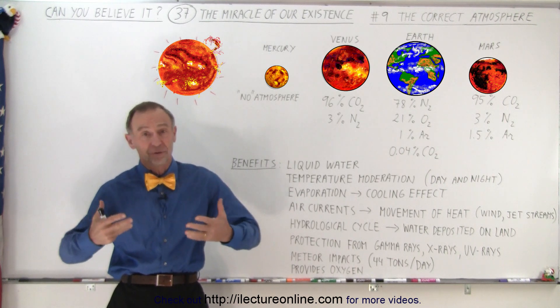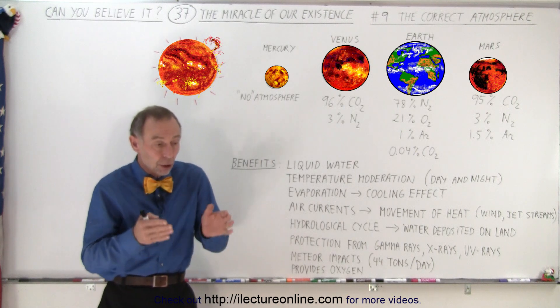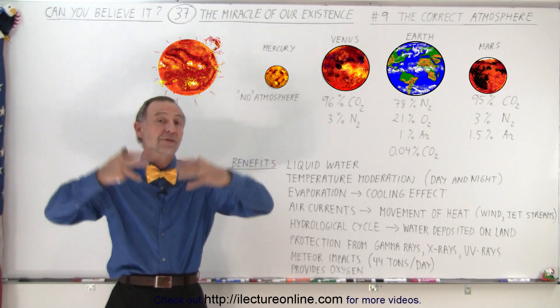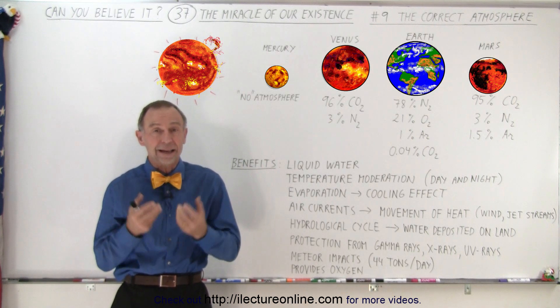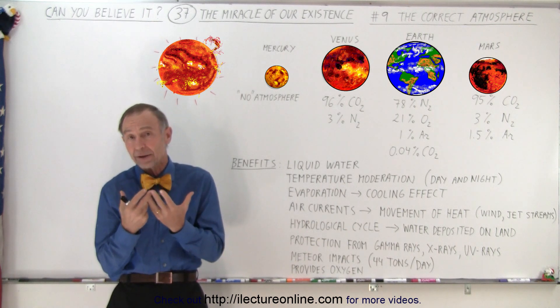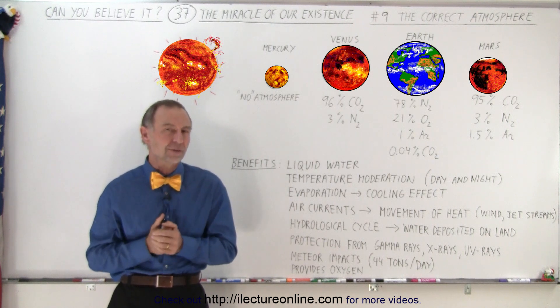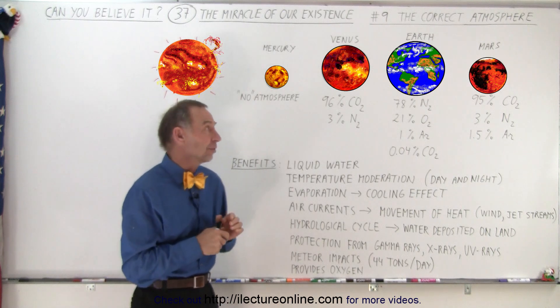For life to be able to exist, for us to be able to exist, we need to live on a planet that's a terrestrial planet close enough to the Sun, large enough to be able to hang on to its atmosphere. But it's not just that it has an atmosphere, it has to be the correct atmosphere. And the Earth happens to have just about the perfect atmosphere for life to exist, for us to be able to exist. To get a feel for that, let's compare it to the other three planets.